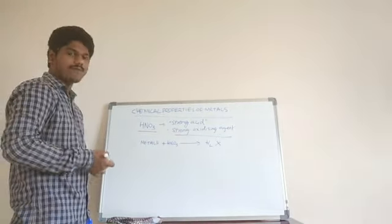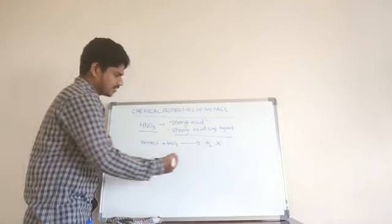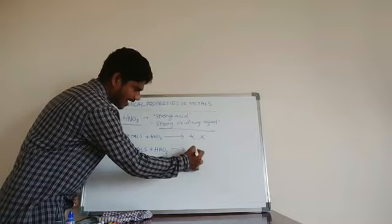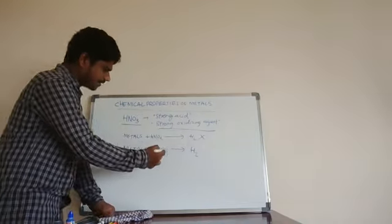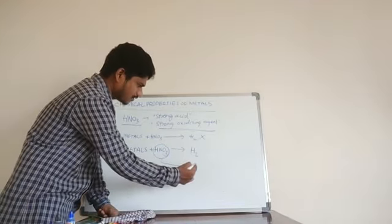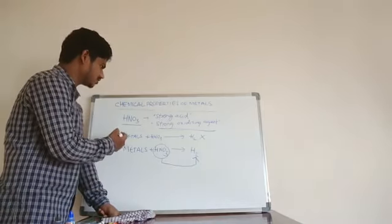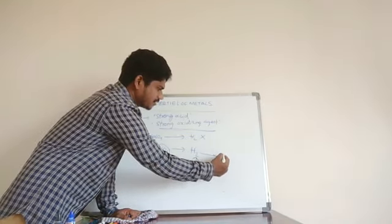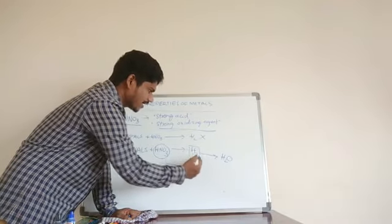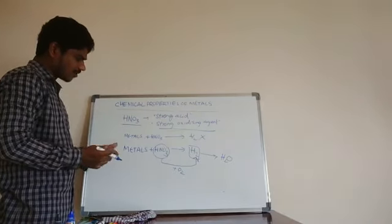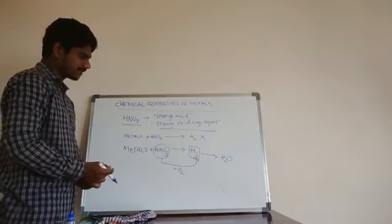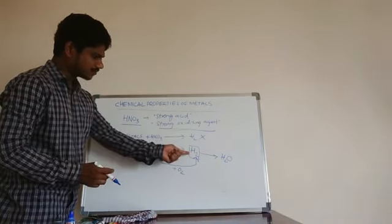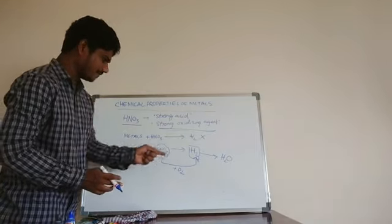H₂ gas is not produced with nitric acid. The reason is: initially when metals react with HNO₃, hydrogen gas is produced, but because HNO₃ is a strong oxidizing agent, it adds oxygen to this hydrogen and it becomes H₂O. So here you will not have hydrogen gas produced. The hydrogen gas produced in the reaction is oxidized to water by HNO₃.